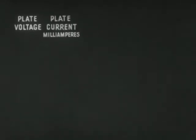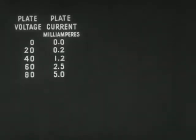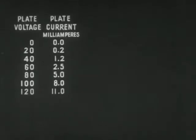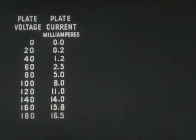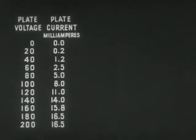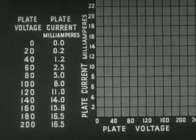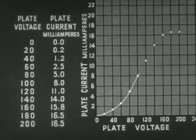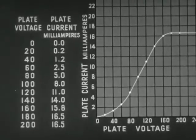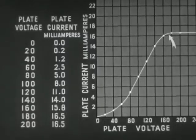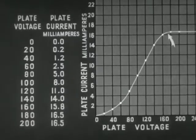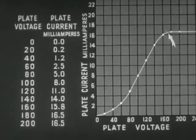If the voltage on the plate is increased, the plate current will increase, since more electrons will be attracted by the higher positive charge. Using ordinates representing voltage and current, we can trace a curve to show this relationship. Note the saturation point, beyond which there is no increase in plate current even when the voltage is increased.